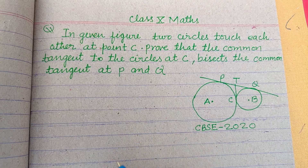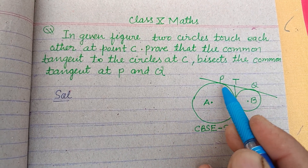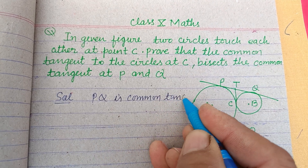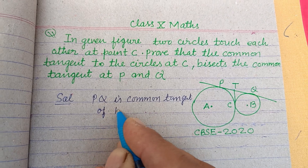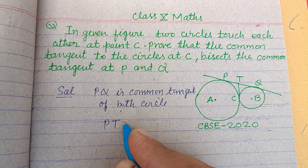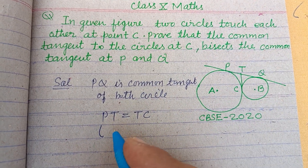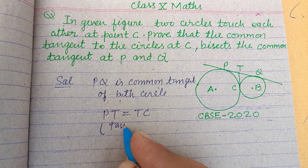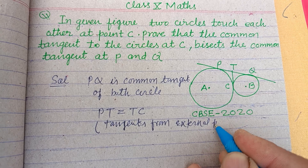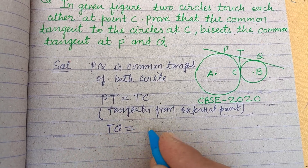In this question, it is given that PQ is a common tangent of both circles. Here, PT equals TC — tangents drawn from an external point are equal in length. So by this theorem, PT equal to TC.